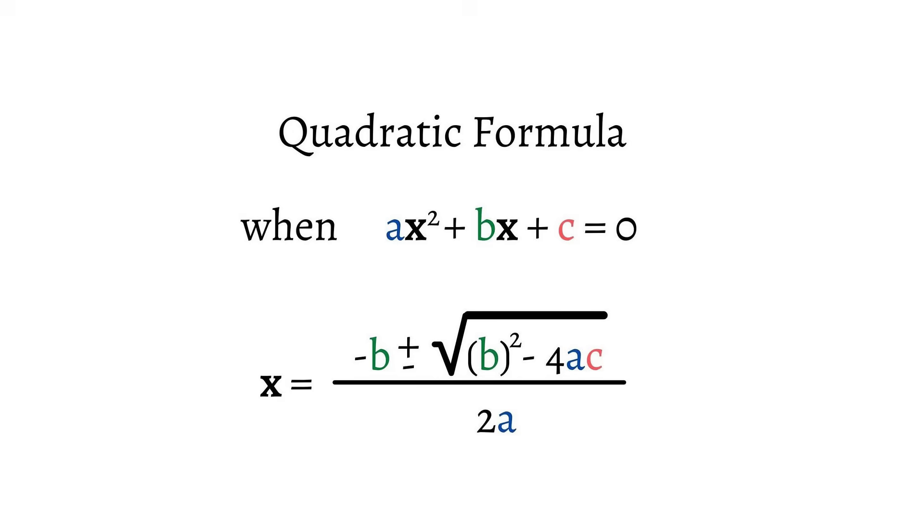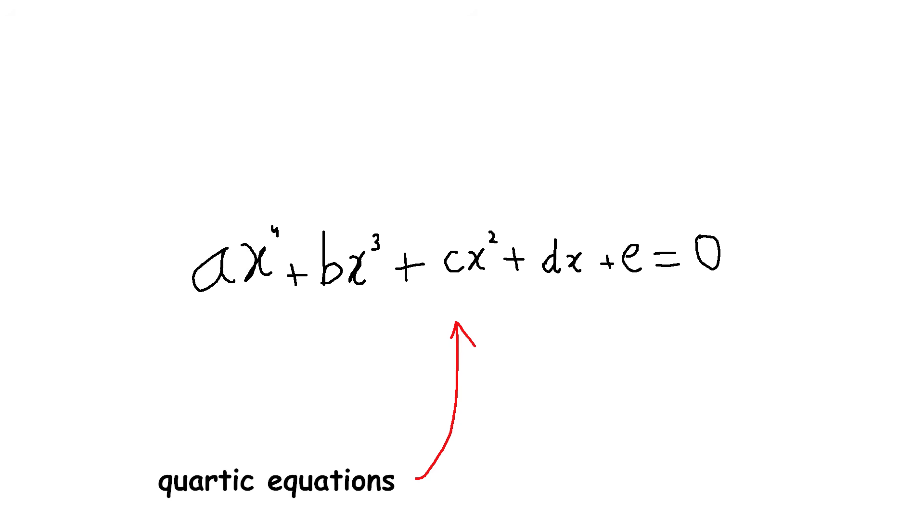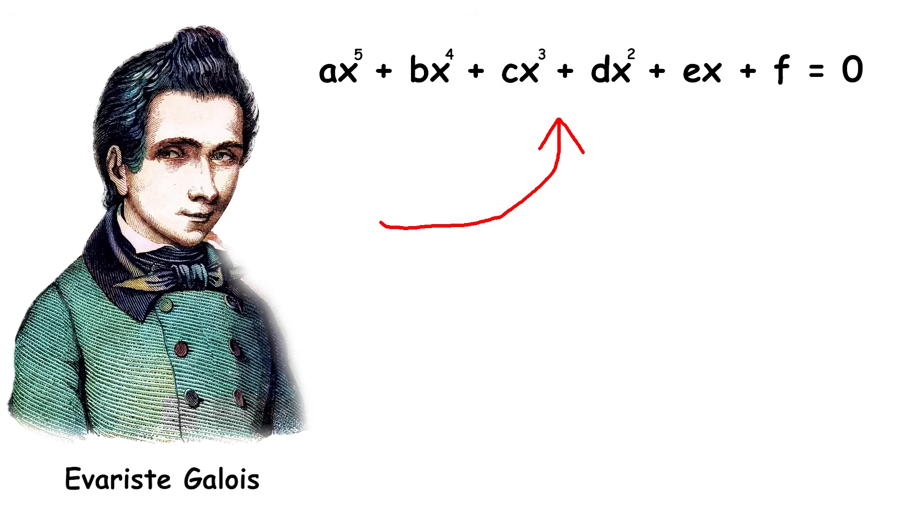Mathematicians wondered if they could find similar compact formulas for solving higher degree polynomial equations, like cubic equations or quartic equations. They were able to find such formulas for cubic and quartic equations, but the formulas got increasingly complex as the degree increased. Then, in the 1800s, a young French mathematician named Évariste Galois made a groundbreaking discovery. He proved that for polynomial equations of degree 5 or higher, it is impossible to find a general formula to solve them, like the quadratic formula.